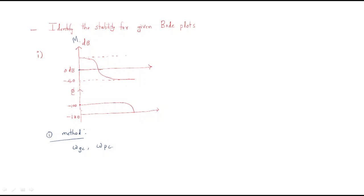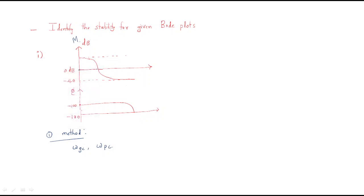Look at here. The point where the magnitude becomes 0 dB — that frequency is known as the gain crossover frequency. And the phase — where it touches minus 180 degrees — that frequency is known as the phase crossover frequency.